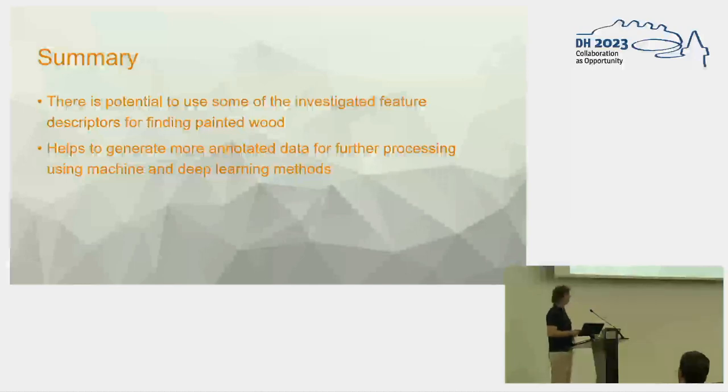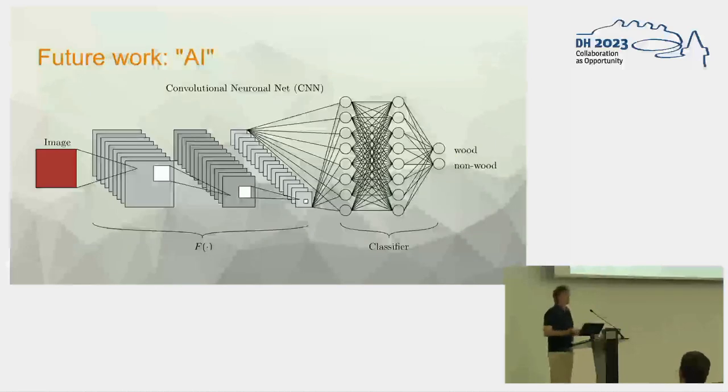And it would help to increase our data amount and also to help the annotation task so that we have some computer support. Because we need more data if we go into our future work where we want to train artificial intelligence nets so CNN and make a feature extract from these filters where we learn all these filter coefficients. Then we have again this vector representation and then we train a classifier which can decide whether it's wood or non-wood.